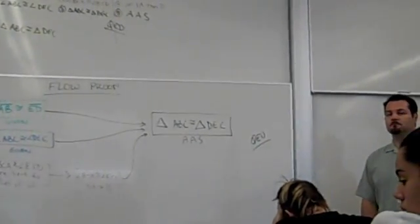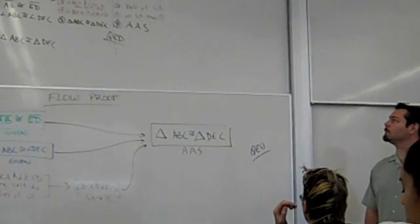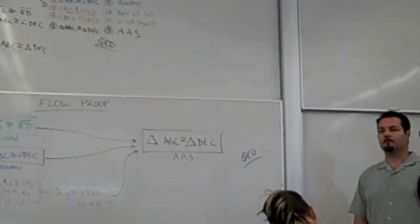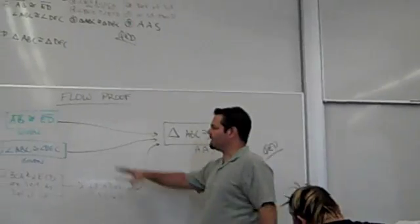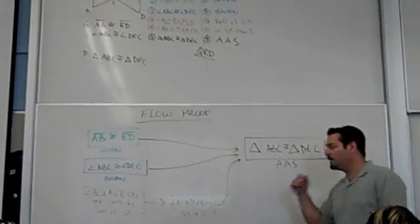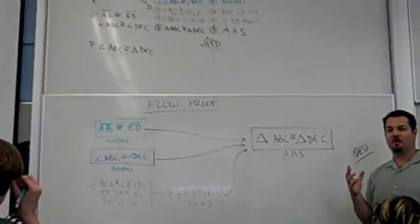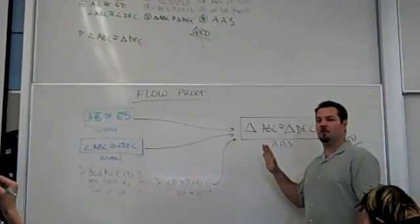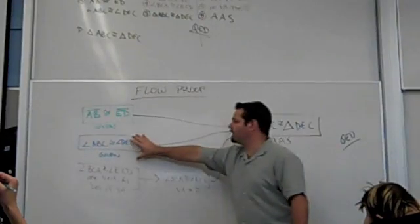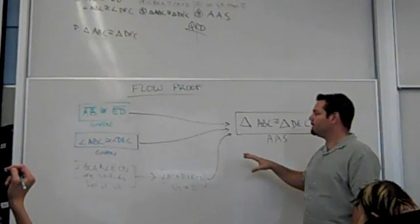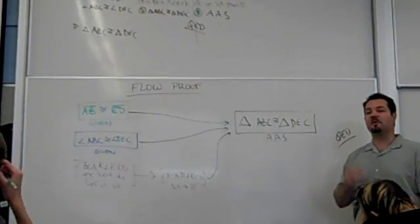A student asks: if it was longer with more steps, would you keep going down and then have the last one off to the side? Potentially. If you had more pieces to put in, you could make them go down this way and have a single piece over here — it kind of depends on the proof. I don't mind if you go left to right or top down. You could arrange boxes horizontally and then flow down. It doesn't matter as long as the arrows demonstrate the flow.